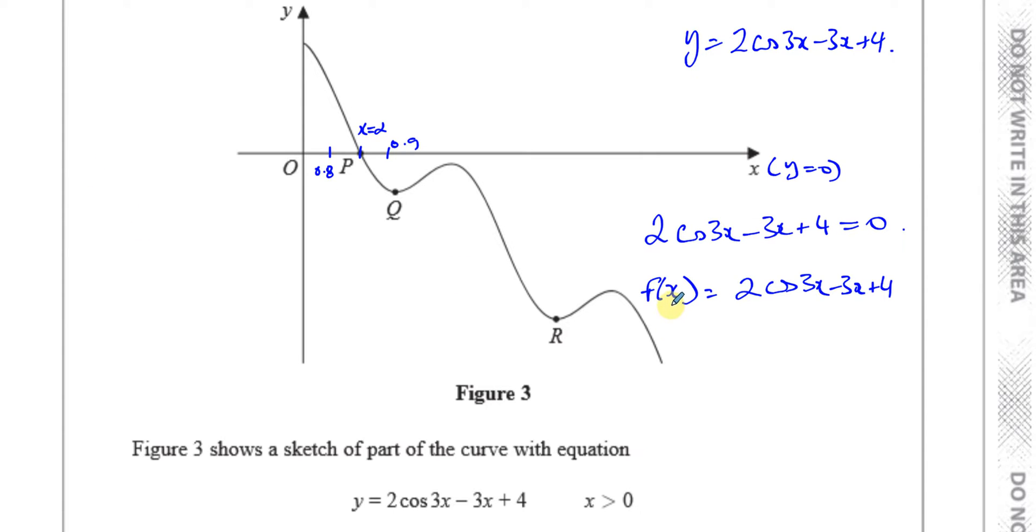Okay. And if I substitute x equals 0.8 into this equation, according to the way the graph looks here, that's going to give me a positive value for y. f of x will be positive. And if I put x equals 0.9 into this equation, it's going to give me a negative value for y.